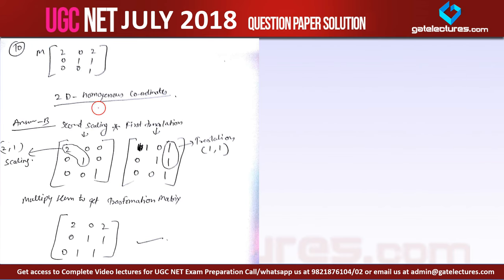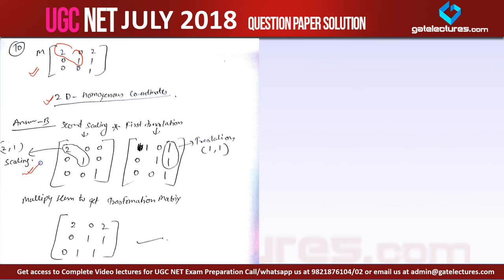Now look at the solution. This is the matrix that is given, and it is given in 2D homogeneous coordinates. In this matrix, this part here is representing scaling, and this part here — because this matrix generally comes by scaling multiplication by translation.